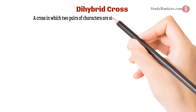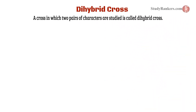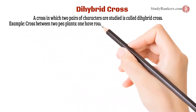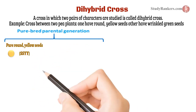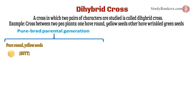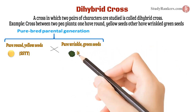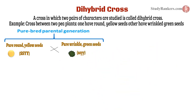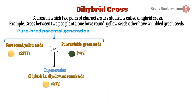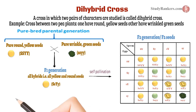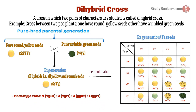The next topic is the dihybrid cross. A cross in which two pairs of characters are studied is called a dihybrid cross. For example, a cross between two pea plants — one with round yellow seeds and the other with wrinkled green seeds. He took pure round yellow seeds (capital SSYY) and crossed them with pure wrinkled green seeds (small ssyy). All the F1 generation showed only the dominant form for both traits — all yellow and round seeds. When these F1 plants were allowed to self-pollinate, the F2 seeds showed a phenotypic ratio of about 9:3:3:1.